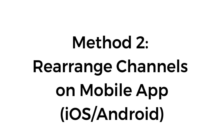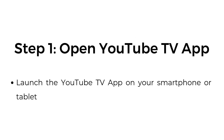Method number two: rearrange channels on mobile app, iOS and Android. Step number one, open the YouTube TV app. Launch the YouTube TV app on your smartphone or tablet.